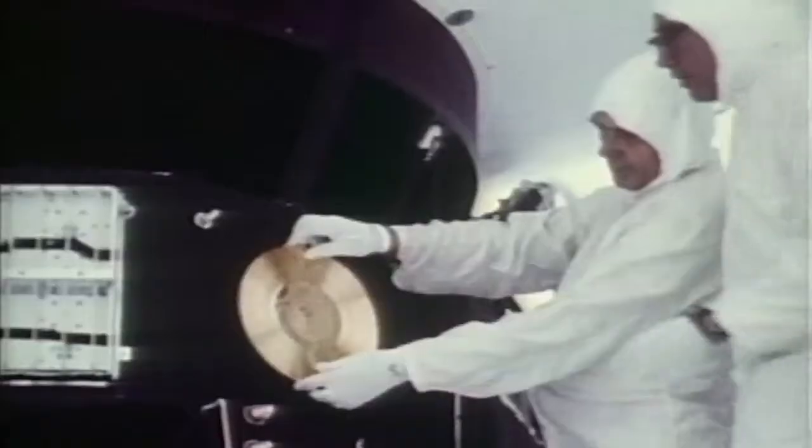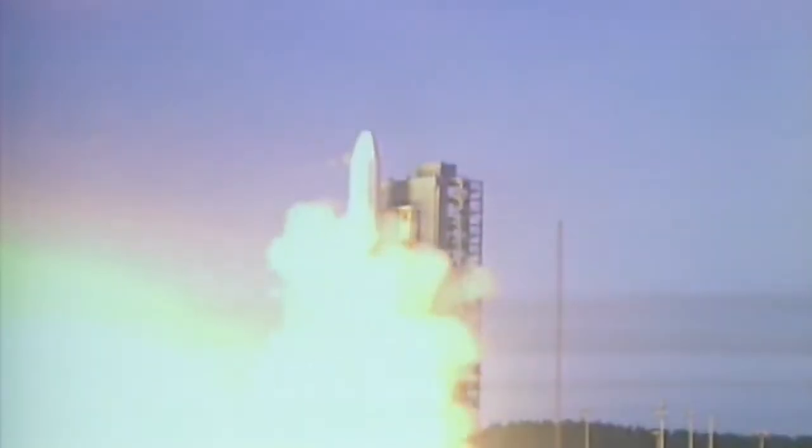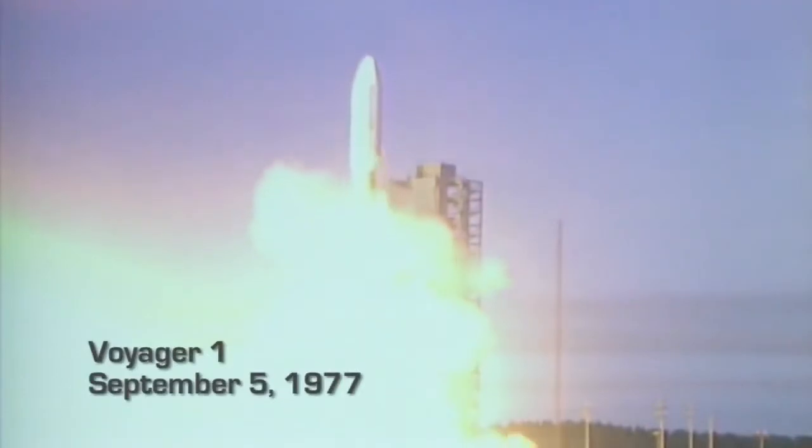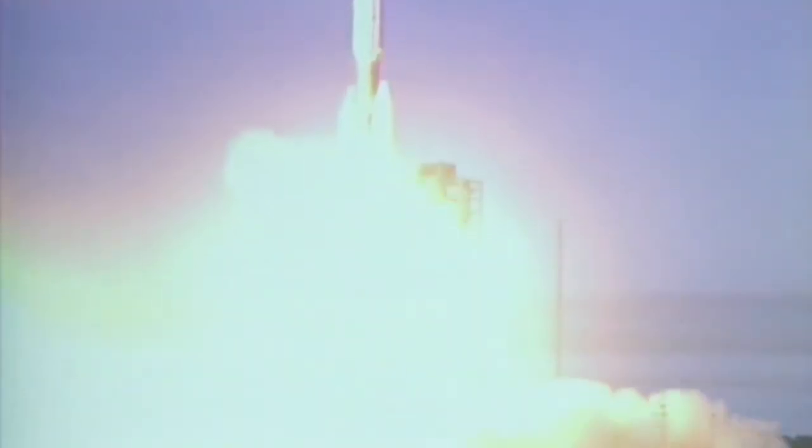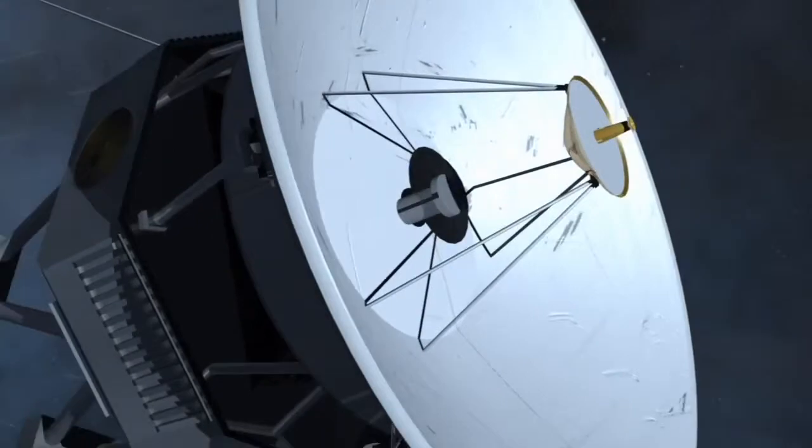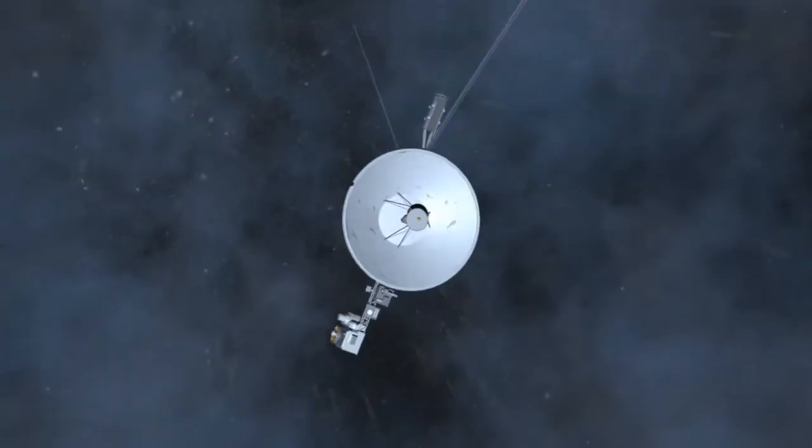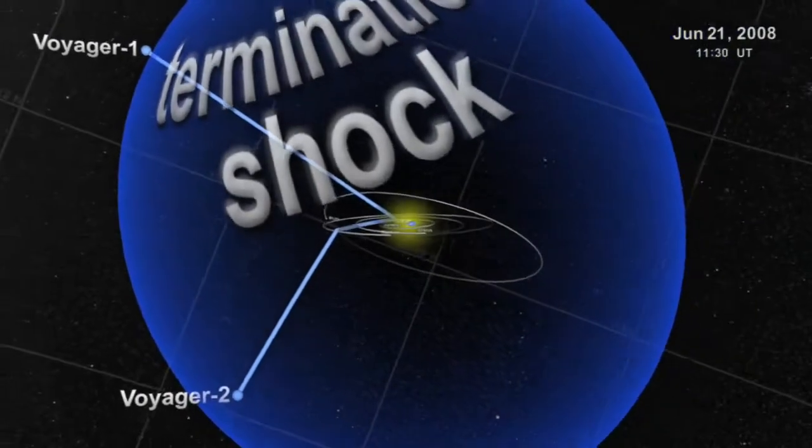Over 30 years ago, Voyager 1 and 2 set out for Jupiter, Saturn, and beyond. Now as the twin spacecrafts explore the outer reaches some 9 billion miles away from Earth, they have crossed the heliosphere, the bubble of supersonic solar wind.